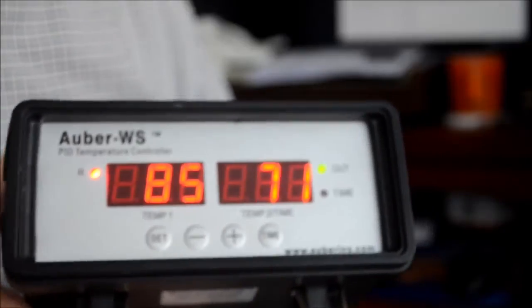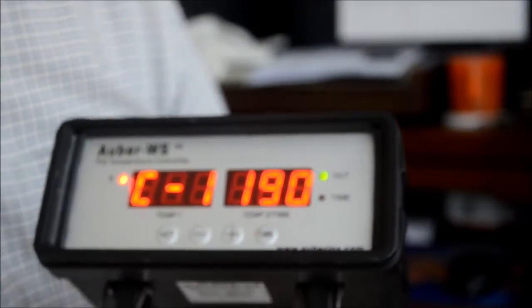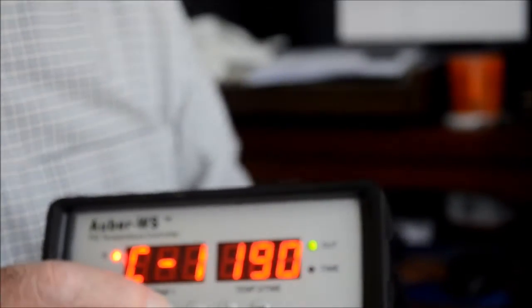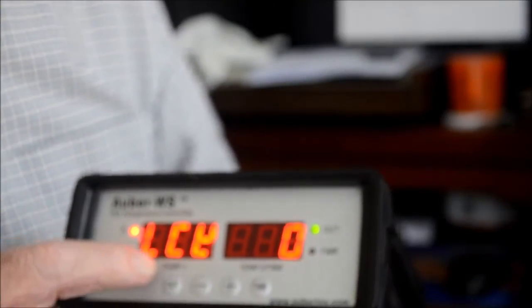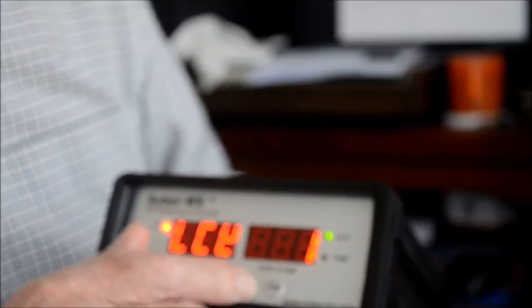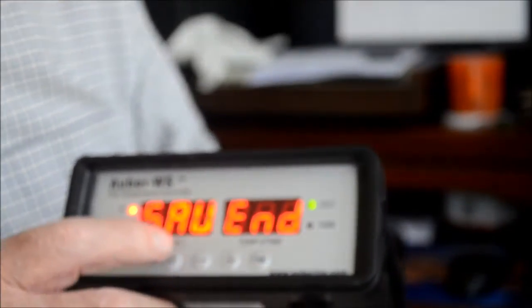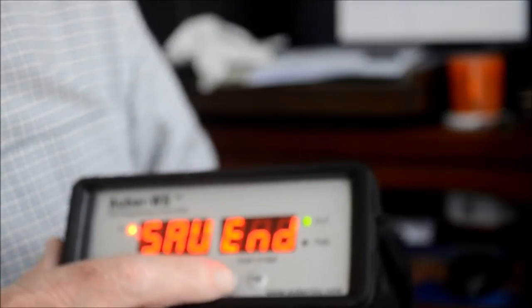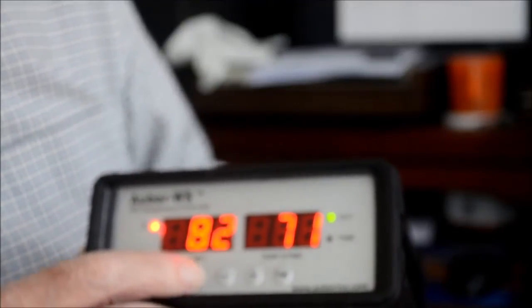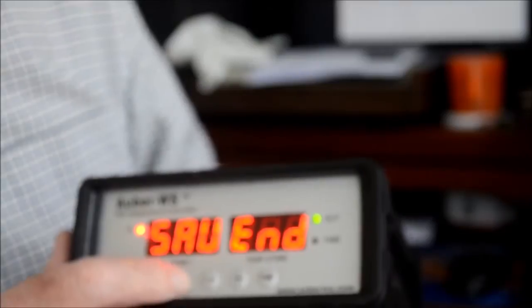We set a program in here a while ago. And right now it's in working memory. If I hit the set button that pulls up the working memory and shows me what's there. So to save this program, if you hold down this button for 2 seconds, it'll come up and say lock LCK 0. Put a 2 there and hit your set button. It comes up and says save to end.